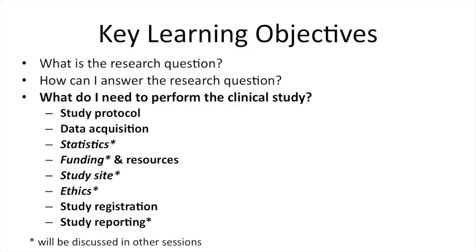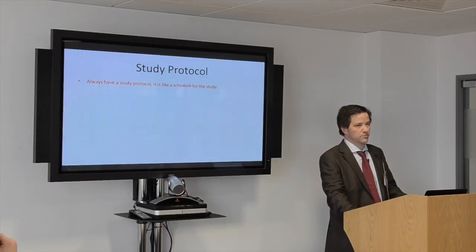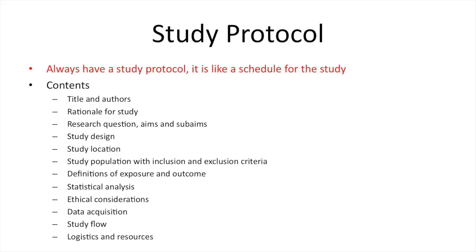You need always to have a study protocol — like your schedule — and you have to say before what you want to do, not write it afterwards. The contents of a study protocol include: title and authors, rationale, research question with aims and sub-aims, study design, study location, study population, definition of exposure and outcome, statistical analysis, ethical considerations, data acquisition, study flow, and logistics and resources.